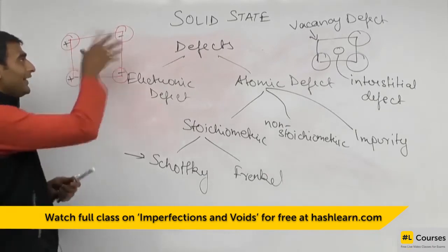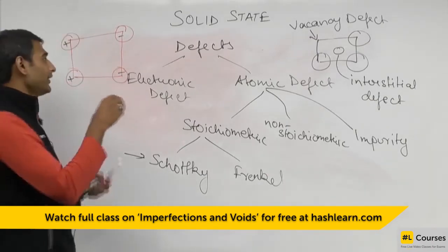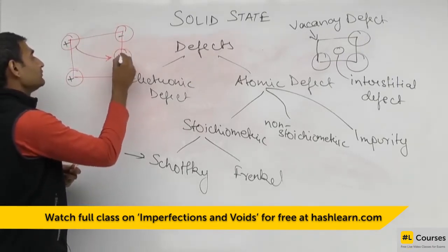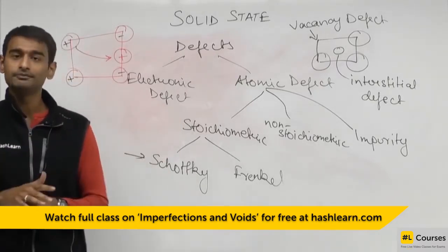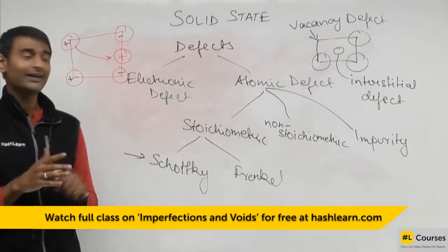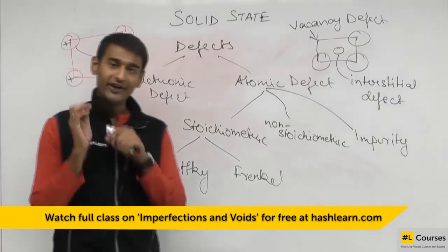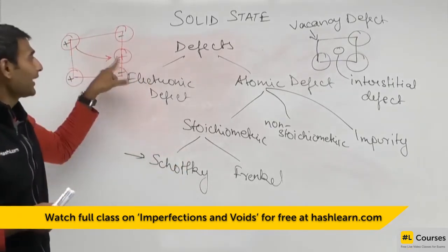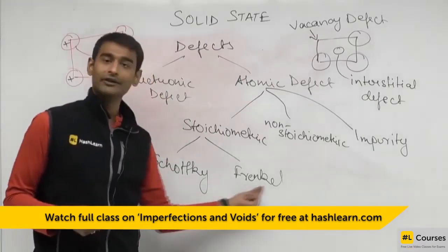But suppose, in this type of compound, an ion leaves its place and occupies some other interstitial position. In this case, it is merely a rearrangement of the atom, so the density will not change. That type of defect, in which a vacancy defect is formed and an interstitial defect is also formed, is called a Frenkel defect.